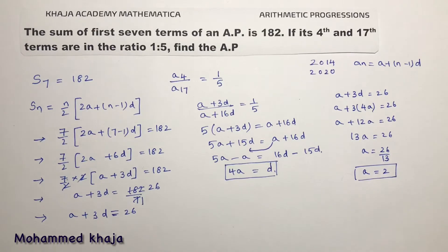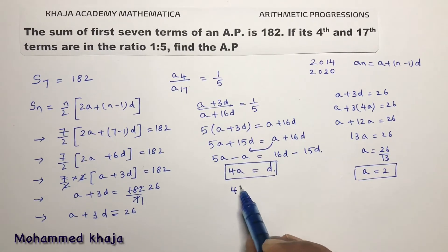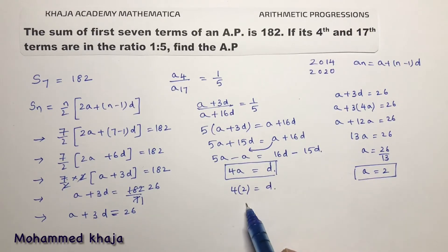13 times 2 is 26. Now substitute this value of A. 4 times 2 is D. So D equals 4 into 2, which is 8.